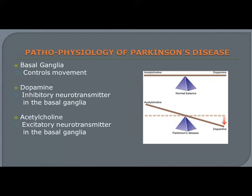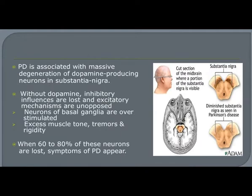Dopamine is the inhibitory neurotransmitter while acetylcholine is the excitatory neurotransmitter. In Parkinson's disease, there is degeneration and loss of neurons in substantia nigra responsible for dopamine synthesis. Loss of these neurons leads to dopamine deficiency in basal ganglia, which allows cholinergic transmission to predominate. Dopamine deficiency and cholinergic predominance are responsible for the manifestations of Parkinson's disease, leading to excess muscle tone, tremors, and rigidity.